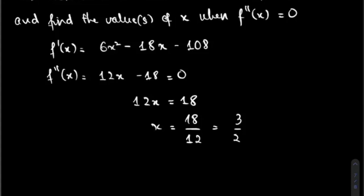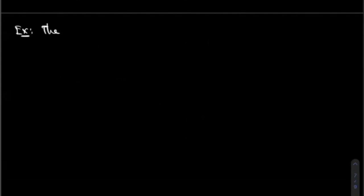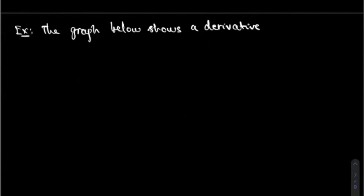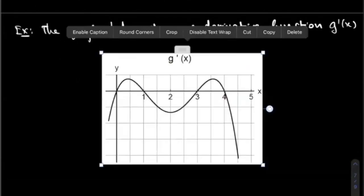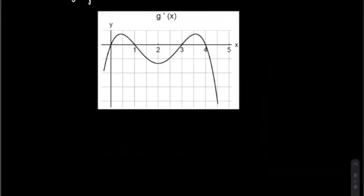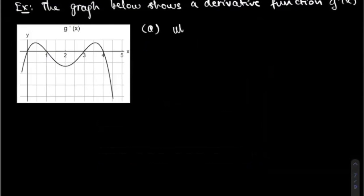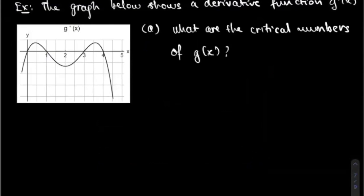I'm going to give you another problem to do. So next example: the graph below shows the derivative function G prime of X. So this is the graph. The first question is: what are the critical numbers of G of X? Not G prime of X — I give you a derivative function, and I want to know what are the critical numbers of G of X.